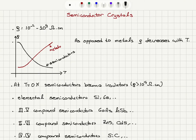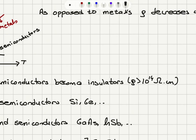At zero Kelvin, semiconductors become insulators. Even though the band gap is small, it becomes much larger than the thermal energy, so electrons cannot get excited from the valence band to the conduction band. We don't have empty states for electrons to move into, so conduction becomes more difficult and resistivity goes above 10^14 ohm-centimeter.